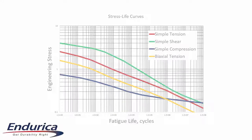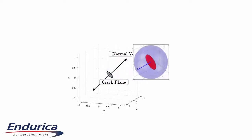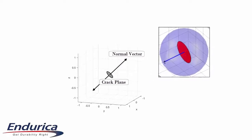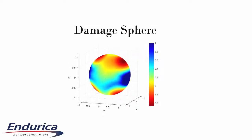Critical plane analysis checks how an oriented crack develops under a given deformation history. Each potential orientation has a unit normal vector. We compute fatigue life for each orientation and color the tip of each vector — red for short life, blue for long. Once we complete the process for all possible crack orientations, we end up with a damage sphere. The damage sphere shows which crack orientation will initiate first for the given loading history.